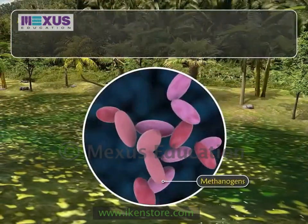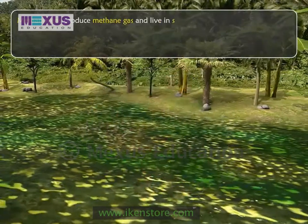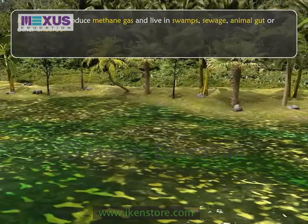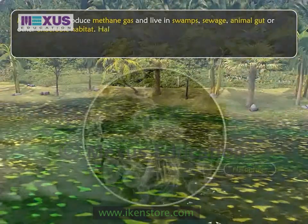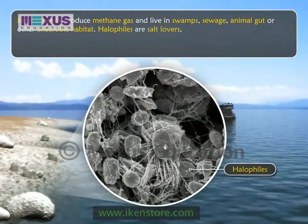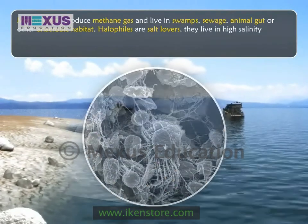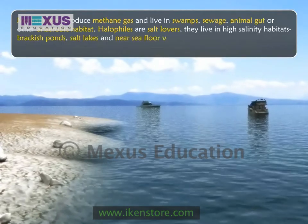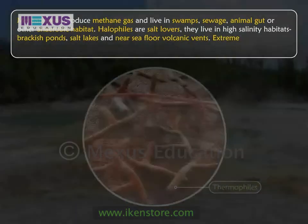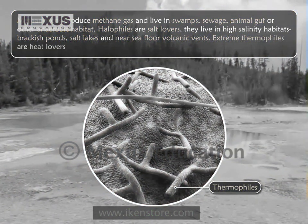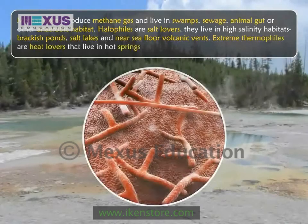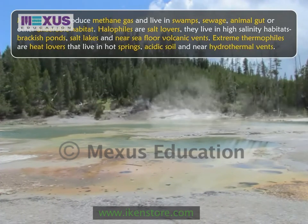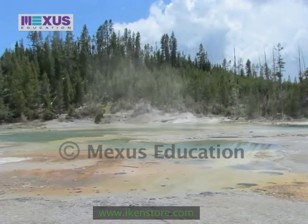Methanogens produce methane gas and live in swamps, sewage, animal gut, or other anaerobic habitats. Halophiles are salt lovers — they live in high salinity habitats, brackish ponds, salt lakes, and near seafloor volcanic vents. Extreme thermophiles are heat lovers that live in hot springs, acidic soil, and near hydrothermal vents where temperature is usually around 2,500 degrees Celsius.